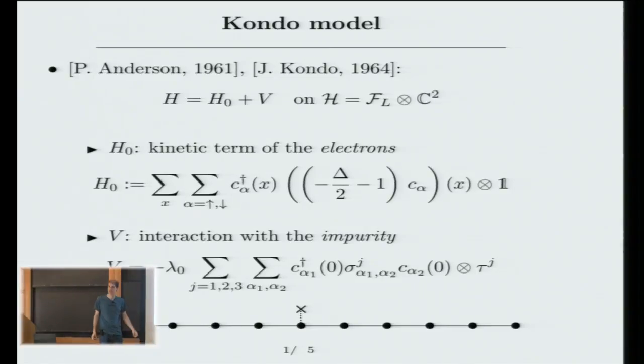This is telling you how your electrons behave, how they hop around on this lattice here and how they interact with the impurity. By Hamiltonian, the important thing that you have to keep in mind is that it's going to be the sum of two terms, an H0 and a V. The H0 is the kinetic term of the electrons. The H0 tells you how the electrons hop around on the lattice.